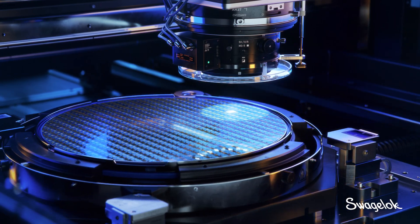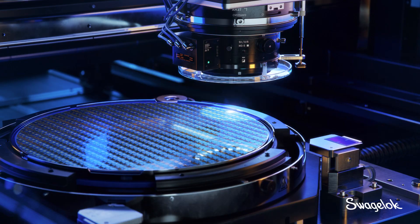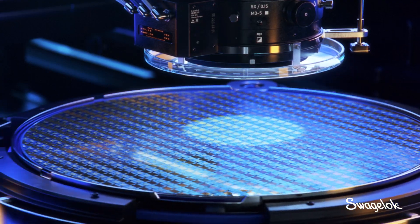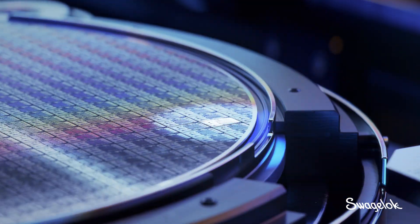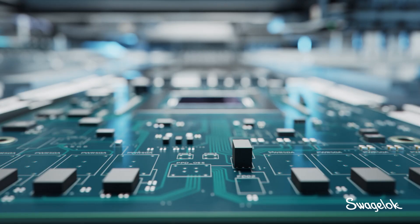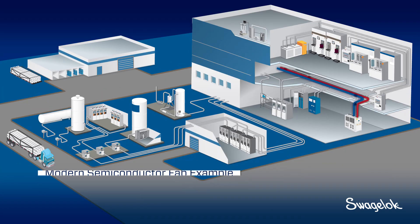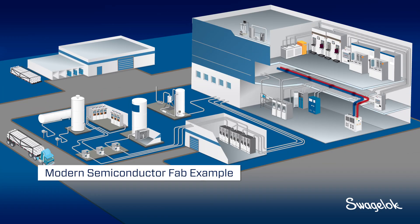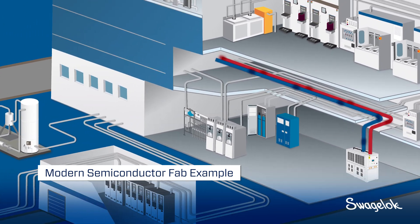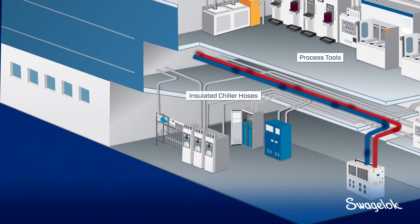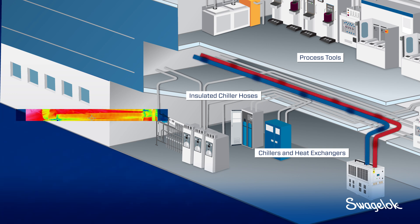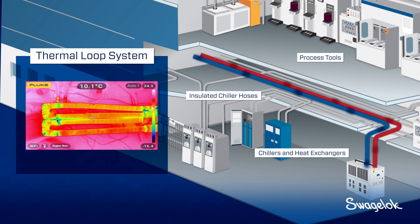Keeping primary semiconductor production equipment and support systems operating at peak performance is essential to maximizing wafer yield in a modern semiconductor fab. One of the systems that impacts yield is the thermal loop, where fluid loops between the chiller and the tool to minimize thermal variation. It is critical that the thermal loop system is both leak-tight and properly insulated.